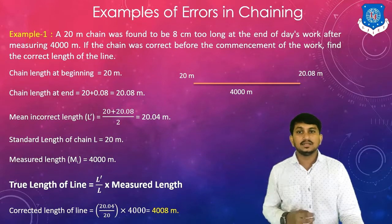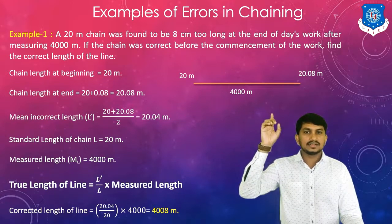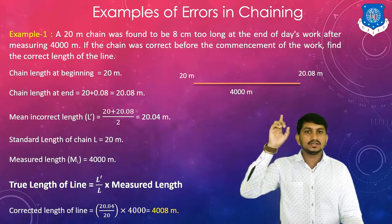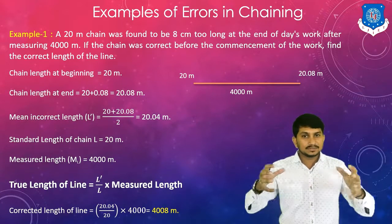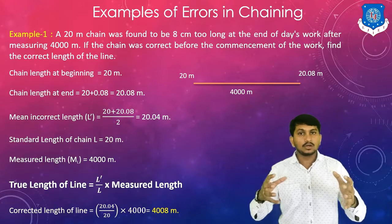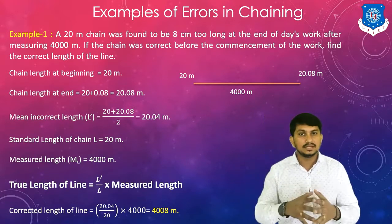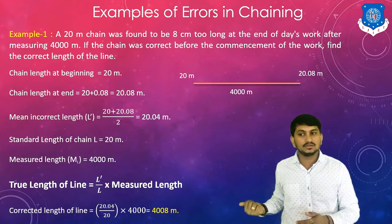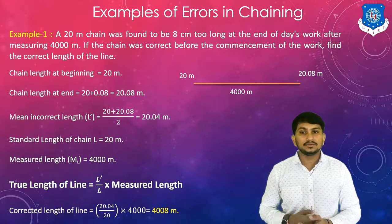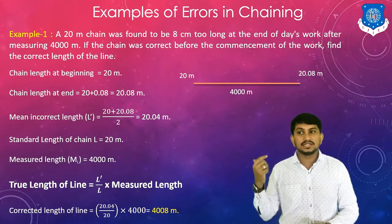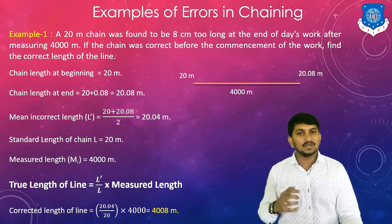As we discussed, when the chain is too long — here the length increased by 8 centimeters — the chain is expanded. When the chain is too long, the measured distance of 4,000 meters is less than the actual. The corrected length is 4,008 meters, and the correction is additive. This 8-meter difference is the additive correction to the measured distance. This is example number one.